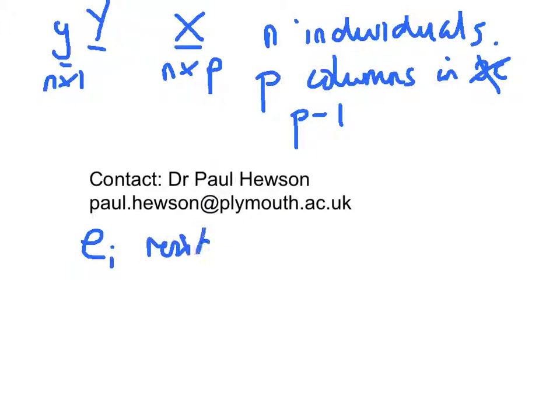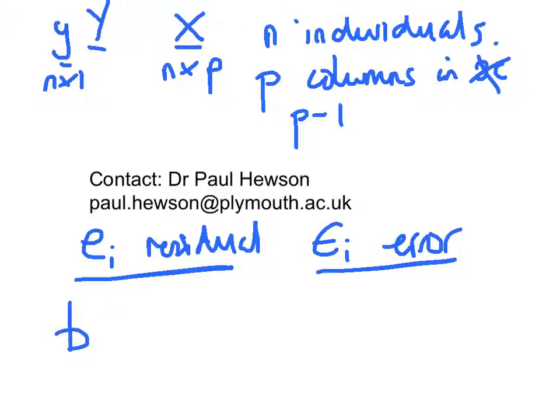Whenever we use e vector, e or e subscript i, that's a residual. We get residuals with line fits. Epsilon is an error, and we get errors with models. Epsilon is a random variable. This is just a feature of a line fit. B is just a slope term in a line fit. Beta is a parameter in a statistical model unknown to us, and therefore fixed for the moment.